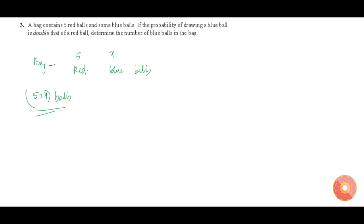Let us find the probability that a ball drawn at random is a blue ball. Let us call this event B — taking out a blue ball. Since there are x blue balls, you can pick any one of the balls from these x blue balls, which means the favorable outcomes is equal to x.